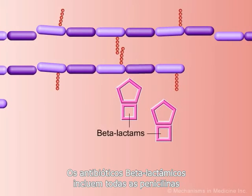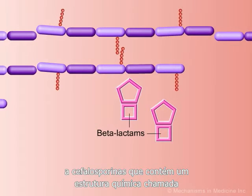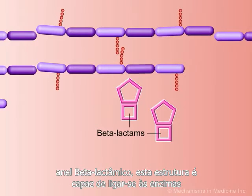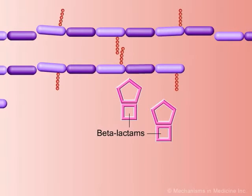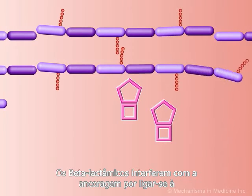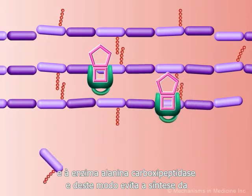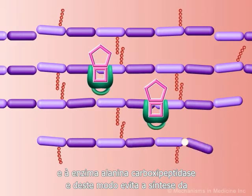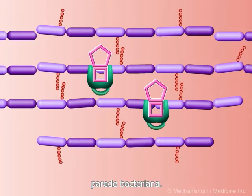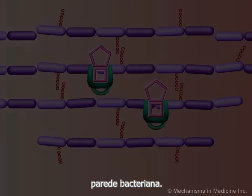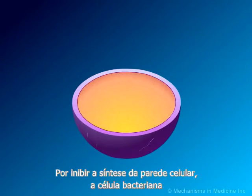Beta-lactam antibiotics include all penicillins and cephalosporins that contain a chemical structure called a beta-lactam ring. This structure is capable of binding to the enzymes that cross-link peptidoglycans. Beta-lactams interfere with cross-linking by binding to transpeptidase and D-alanyl carboxypeptidase enzymes, thus preventing bacterial cell wall synthesis. By inhibiting cell wall synthesis, the bacterial cell is damaged.